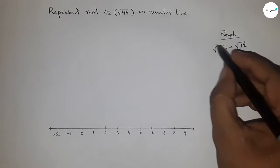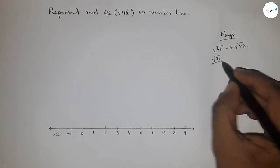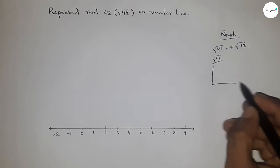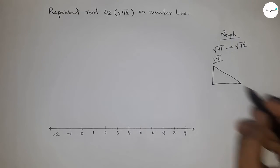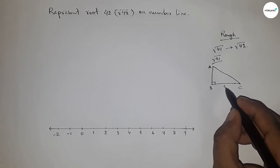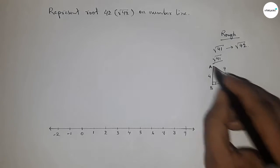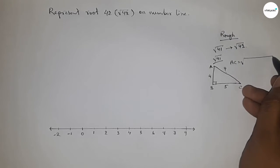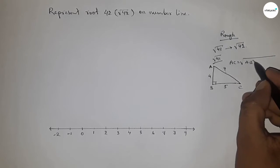So first we have to represent root 41, then root 42. So first discussing about root 41. If there is a right angle triangle ABC with base 5 unit and height 4 unit, then what is hypotenuse? By Pythagorean theorem, hypotenuse equals root over base square plus height square.